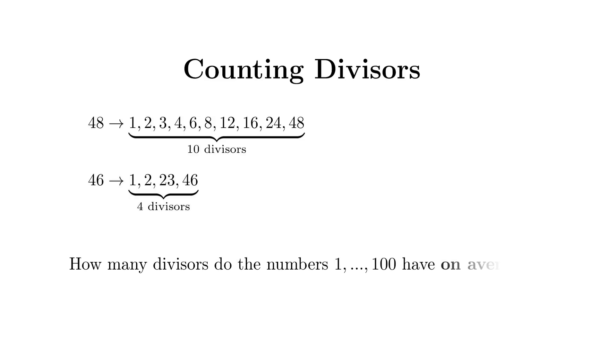Consider all numbers from 1 to, say, 100. Obviously, some numbers, like 48, have many divisors, while others don't. A natural question to ask is, how many divisors do the numbers from 1 to 100 have on average? Even though the task is easy to understand, coming up with a reasonable guess for the average is tricky. And right now, nothing indicates that the answer is connected to Euler's number.